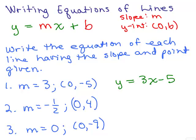Now, if this ordered pair had been (1, -5), we couldn't have done that. It's only because the x-coordinate was 0. So what would it be for number 2? y equals negative 1 half x plus 4.